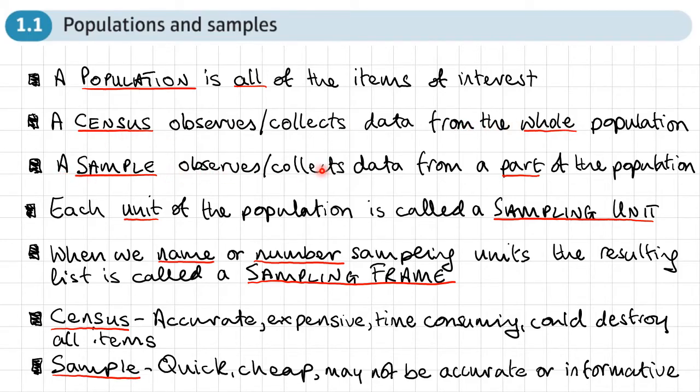Whereas a sample observes and collects data from a part of the population. So if we go back to our factory again, producing these tins of soup, maybe they may take a sample of maybe 10 or 20 tins that they produce out of maybe tens of thousands and just collect and observe the data from that smaller part of the population.